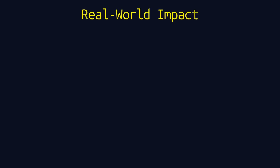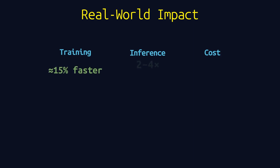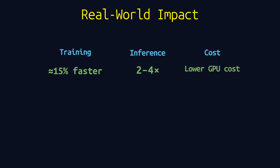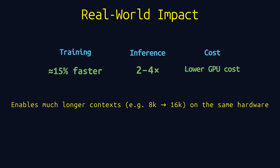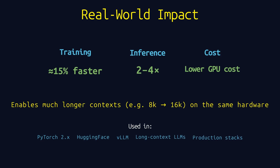What does this mean in practice? Training is 15% to 40% faster — for LLaMA 2-scale models, that's 10 days reduced to 7. Inference sees a 2 to 8 times speed-up on the pre-fill phase, with latency dropping from 200 milliseconds to 50. Memory efficiency means you can run bigger models on smaller GPUs, with cloud GPU costs potentially dropping from $10,000 a month to $3,000. And perhaps most importantly, Flash Attention enables 4 times longer context windows with the same memory budget. Without it, 100K or million-token contexts would be completely impractical.